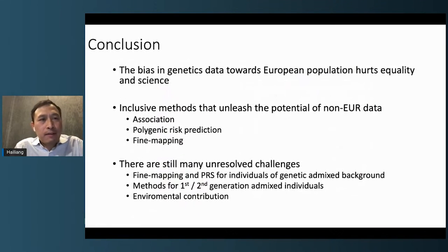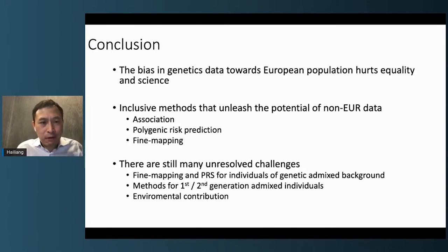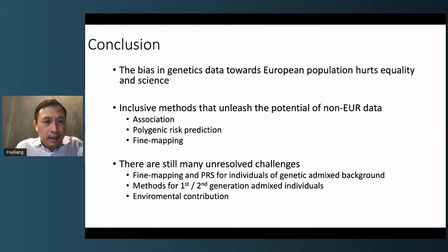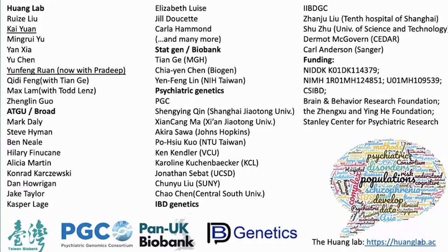I hope I have convinced you that the bias in genetic data towards the European population really hurts both equality and science. I've shared inclusive methods that could unleash the potential of non-European data, including association analysis, polygenic risk prediction, and fine mapping. There are still many unsolved challenges — we really lack methods to analyze admixed individuals, such as fine mapping and PRS methods for them, and the field hasn't seen powerful enough environmental contribution studies, which we should also focus on. Thank you to my lab for powering all the great analysis and method development, and to my colleagues for creating the environment to do this.